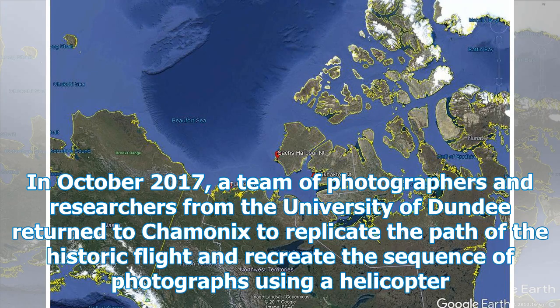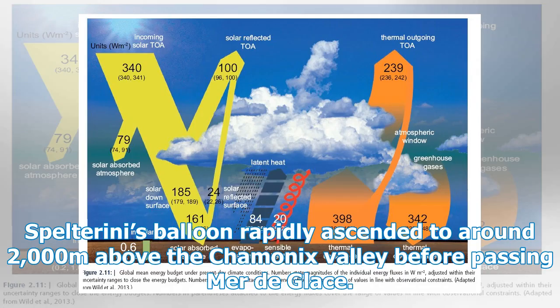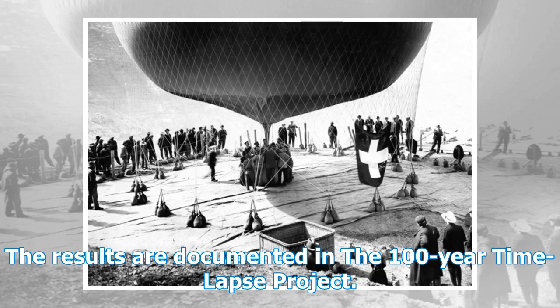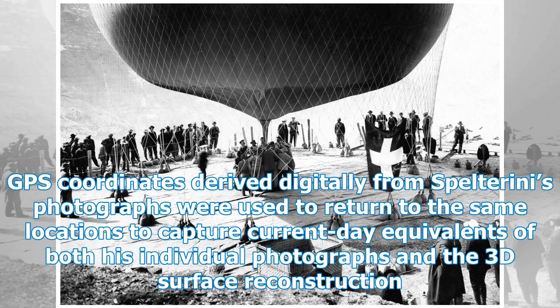In October 2017, a team of photographers and researchers from the University of Dundee returned to Chamonix to replicate the path of the historic flight and recreate the sequence of photographs using a helicopter. Spelterini's balloon had rapidly ascended to around 2,000 meters above the Chamonix valley before passing Mer de Glace — heights virtually inaccessible to unmanned drones, meaning a manned aircraft was needed. The results are documented in the 100-year time-lapse project. GPS coordinates derived digitally from Spelterini's photographs were used to return to the same locations and capture current-day equivalents of both his individual photographs and the 3D surface reconstruction.